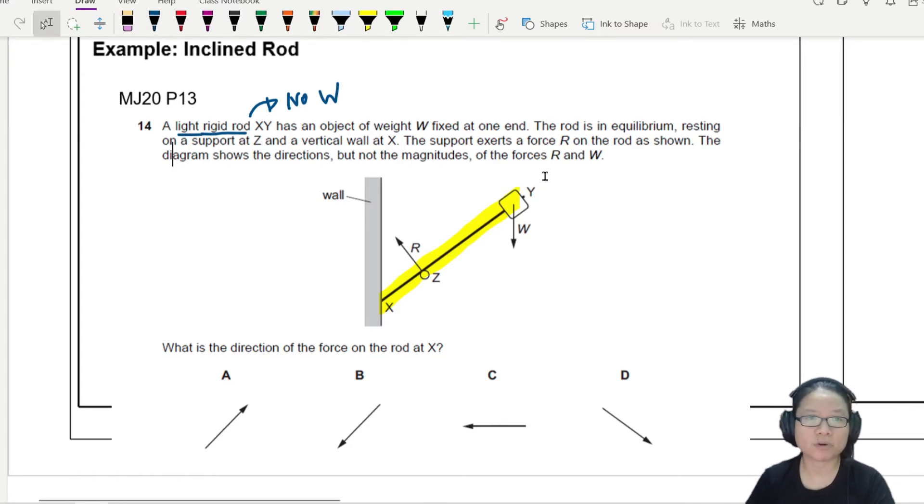The rod is in equilibrium resting on the support Z at X on the vertical wall at X.